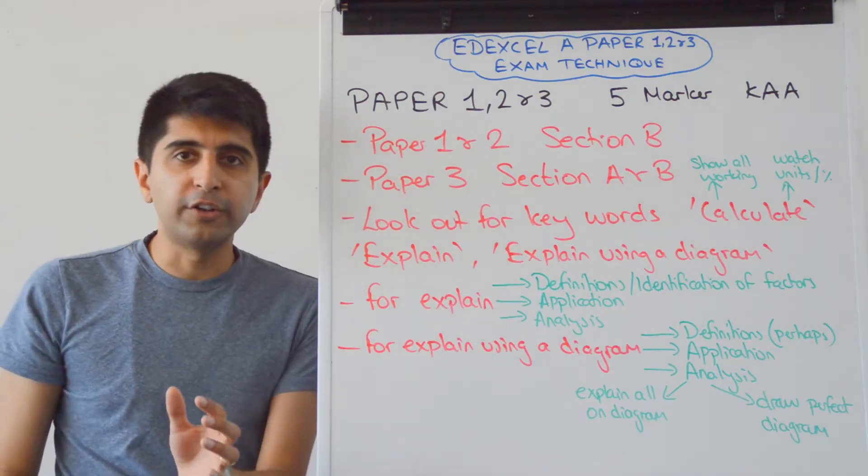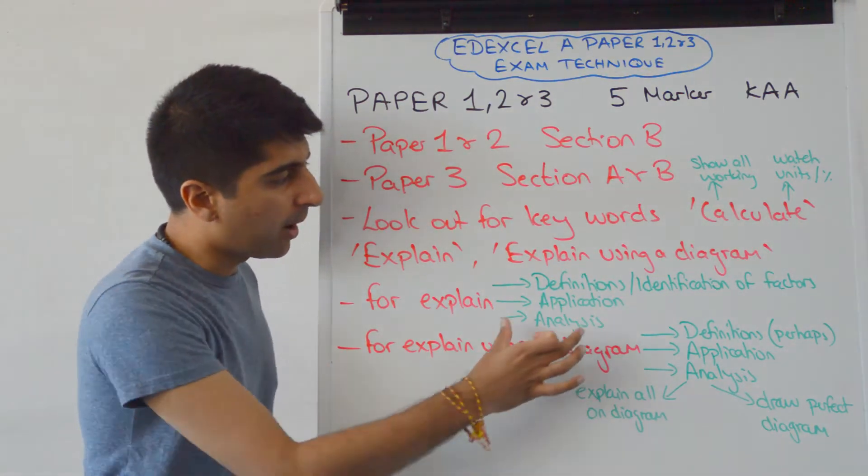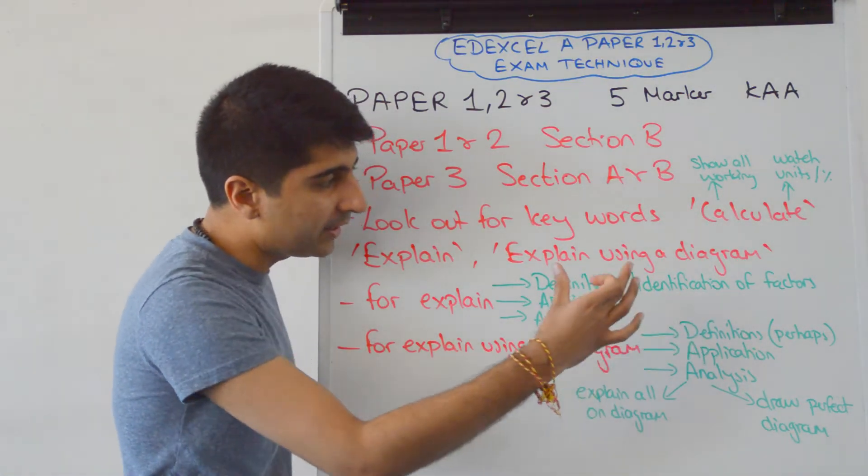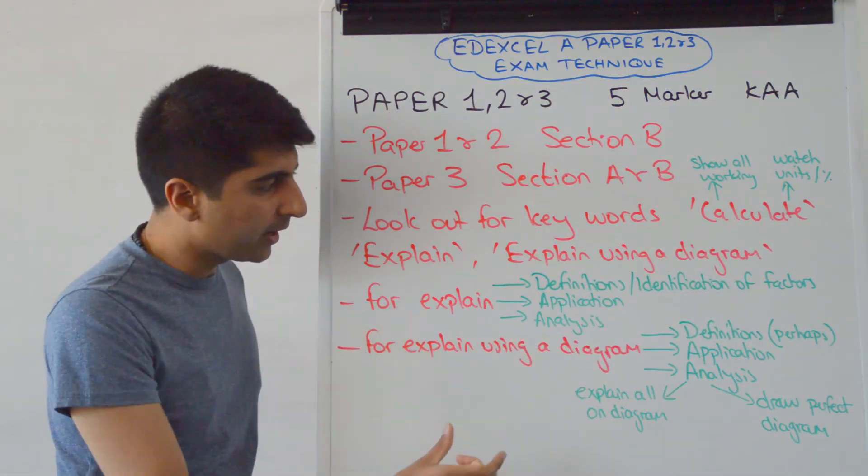Right. If it's an explain question, you've got to make sure that you hit certain key things in your answer. So for knowledge marks, definitions are often an easy way to get knowledge marks or identification of factors. It depends what the question is asking for, but that's the way to get knowledge marks there.